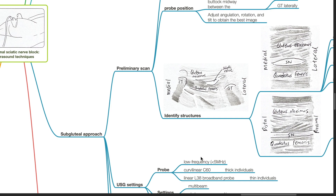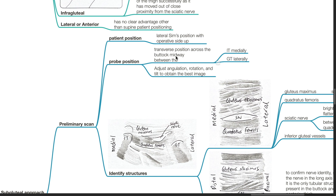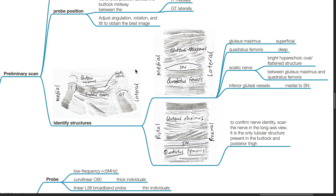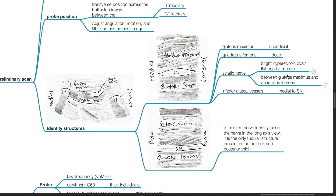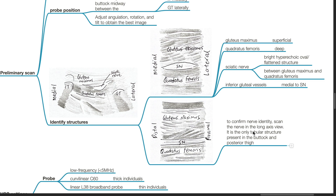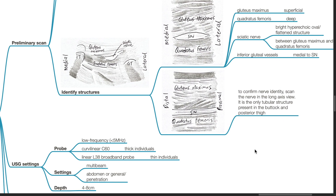Subgluteal ultrasound approach — preliminary scan. Patient position: lateral seams position with operative side up. Probe position: transverse across the buttock midway between the IT medially and GT laterally. Adjust angulation, rotation, and tilt for best images. Identify structures: the gluteus maximus is superficial, quadratus femoris is deep, and the sciatic nerve appears as a bright hyperechoic oval or flattened structure between these muscles. The inferior gluteal vessels are seen medial to the sciatic nerve. To confirm nerve identity, scan in long axis — it is the only tubular structure in the buttock and posterior thigh. Ultrasound settings: low-frequency probe, less than 5 MHz.